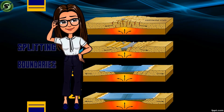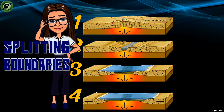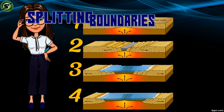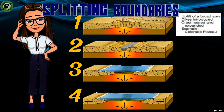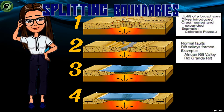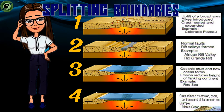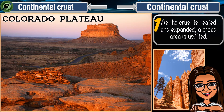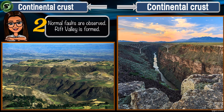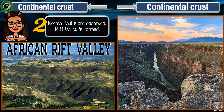The splitting boundaries around the globe let us see their results at each stage. For stage one we have the Colorado Plateau; for stage two we have the African Rift Valley and Rio Grande Valley; for stage three we have the Red Sea; and for the last stage we have the Atlantic Ocean. The concentration of heat beneath makes the crust expanded and uplifted, as observed in the Colorado Plateau.